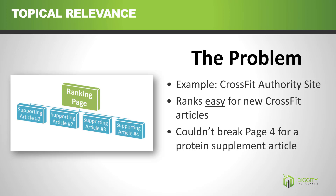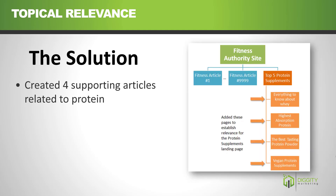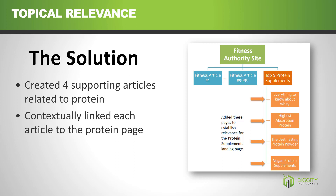The issue was that just because you write one article on something, that isn't enough to tell Google that you're an expert on it. So what we did is we added four supporting articles about protein to that site — shown in light orange on the right here — then linked them to the main protein article page. The result is that we jumped to page one in just two weeks.